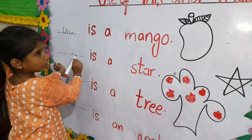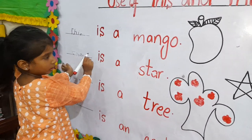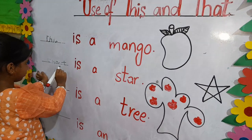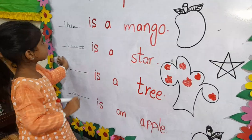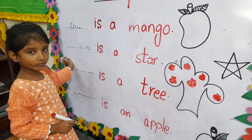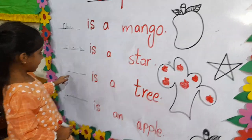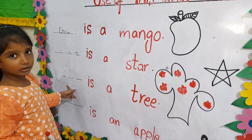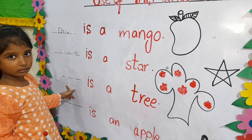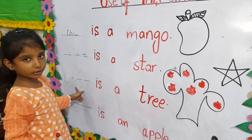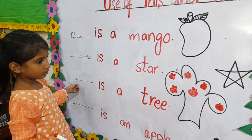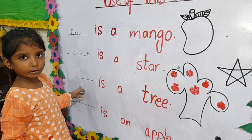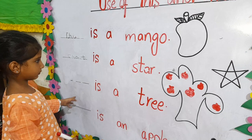Dash is a tree. Dash is a tree — is it close to it or far from it? No, it's close to it. What will we use for this or that? Yes, write.